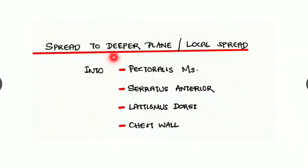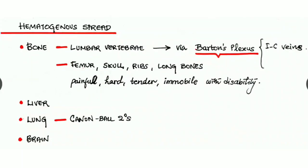Next is spread to deeper plane or the local spread. It may spread into pectoralis muscles, serratus anterior, latissimus dorsi, or even to the chest wall.